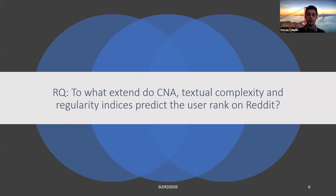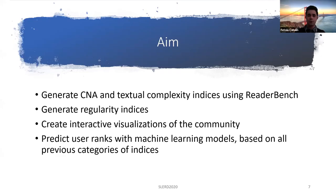Our main research question is: to what extent do CNA indices, textual complexity indices, and regularity indices predict the user rank on Reddit? There is also a category of textual complexity indices computed with ReaderBench, which focus individually on the text of one user — relating to their writing style, how many topics they use, and so on. Our aim was to generate those indices, create interactive visualizations of the community, and use various machine learning models to predict the user rank.